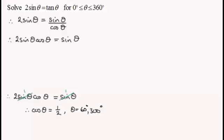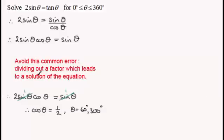Well this is the mistake that is made. It's this cancelling out. What you've got to do is to avoid this common error: dividing out a factor which leads to a solution of the equation. Dividing through in this case by sin(θ). What happens is you'll lose solutions.